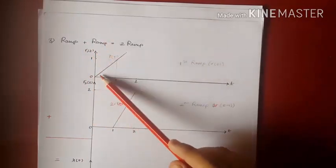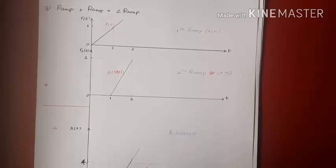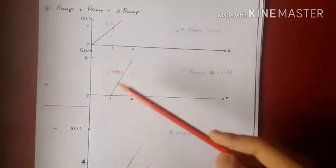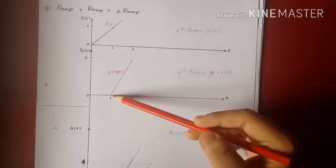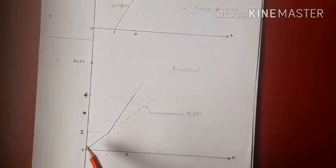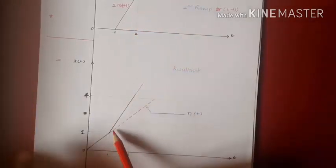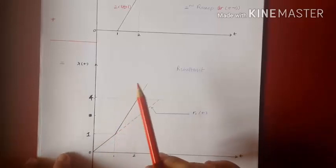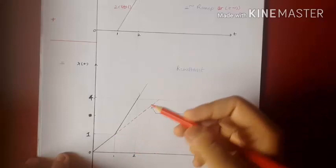Consider R1 of t, a ramp signal beginning at 0 and continuing till infinity with slope 1. R2 of t is another ramp signal with slope 2, beginning at t equals 1 and continuing till infinity. When I add these two signals, I should have the addition of ramp slopes from t equals 1 for both signals. From 0 to 1, the resultant x of t follows R1 of t with slope 1. At t equals 1, R2 of t comes into picture, so the slopes are added: slope of R1 of t is 1, plus slope of R2 of t is 2, giving a slope of 3 from t equals 1 onwards, as shown here.